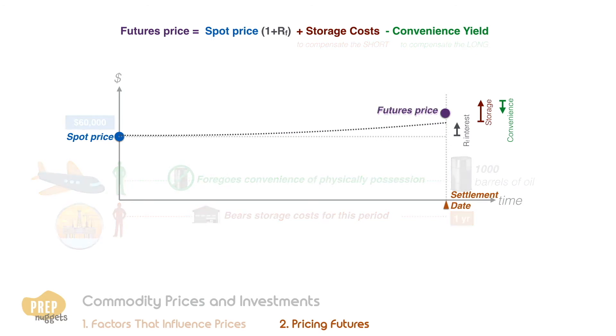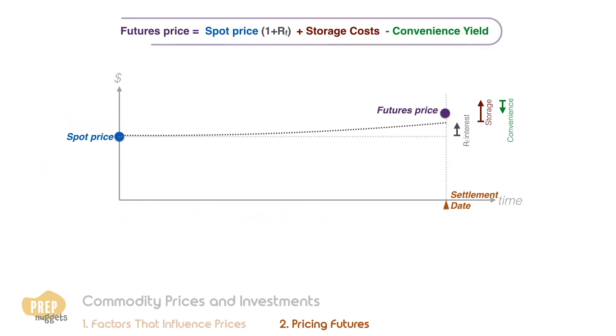And there we have it — the general equation for the commodity's futures price. If this equation does not hold, an arbitrage transaction is possible.